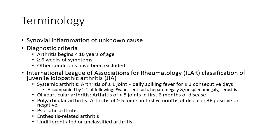Oligoarticular arthritis: arthritis of less than 5 joints in the first 6 months of disease. Polyarthritis: arthritis of 4 or more joints in the first 6 months of disease, either RF positive or RF negative.